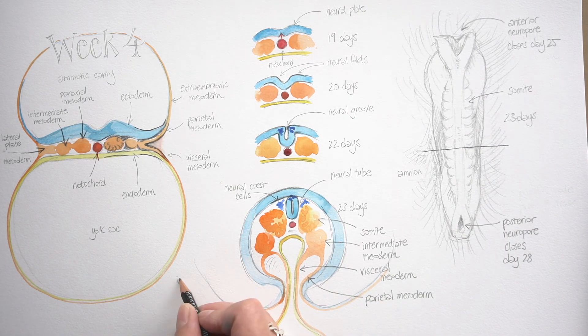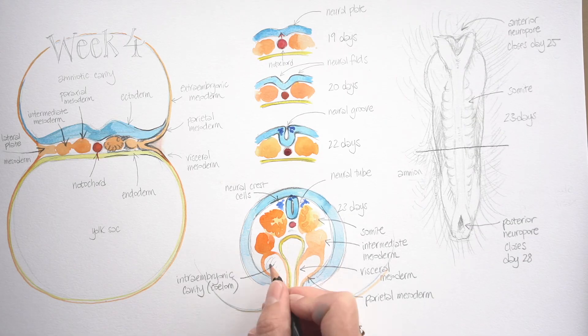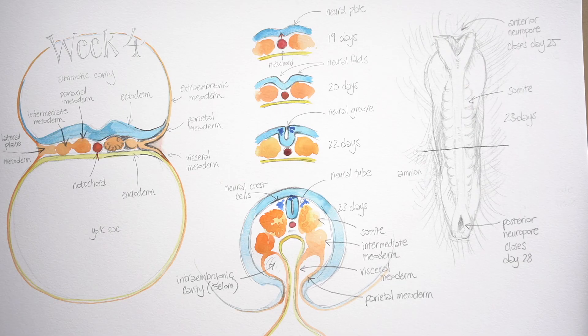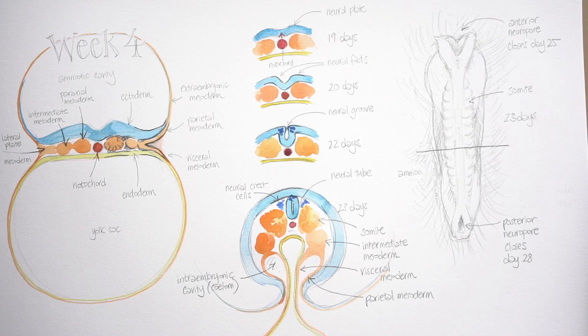So it's closed itself in ectoderm, it's pulled the amniotic sac right around itself. It's pinched off a bit of endoderm within the embryo, and that's going to be the precursor of the gut tube, but it's still attached to the yolk sac on the outside of the embryo as well.